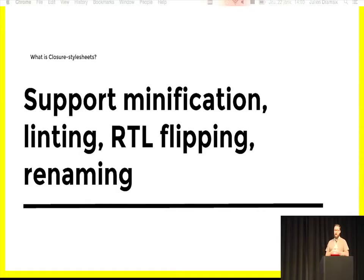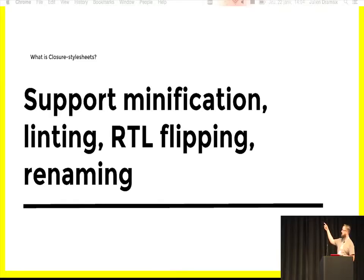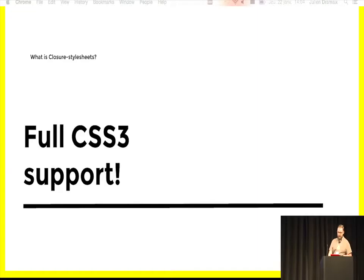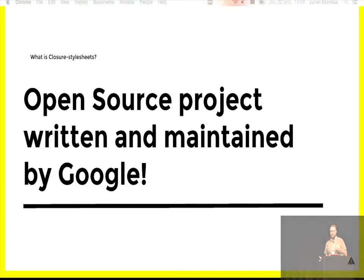The GSS compiler will also minify your CSS very aggressively. You can use the GSS compiler without any change in your code, and just by doing that the size of your application will decrease due to better CSS minification. The GSS compiler will also validate your CSS and fail if it detects errors or invalid CSS. It supports right-to-left flipping, will rename your style classes, and the big feature is full CSS3 support. Finally, GSS is an open source project created and maintained by Google, which gives us more flexibility.